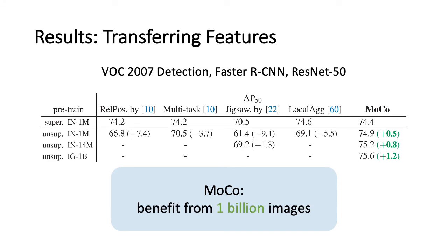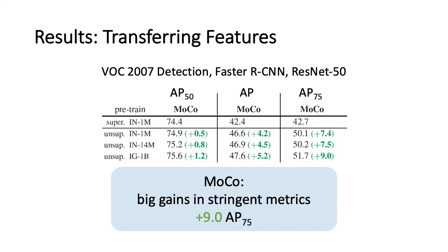Moreover, MoCo can benefit from pre-training in 1 billion images and show more improvement. Even further, MoCo shows bigger gains in more stringent metrics. For example, it improves over supervised pre-training by 9 points in the AP75 metric.